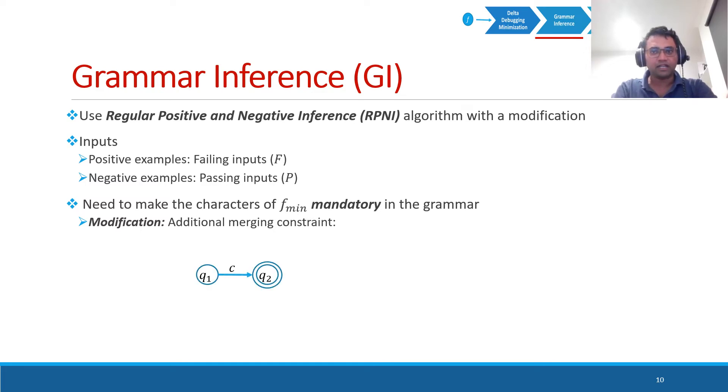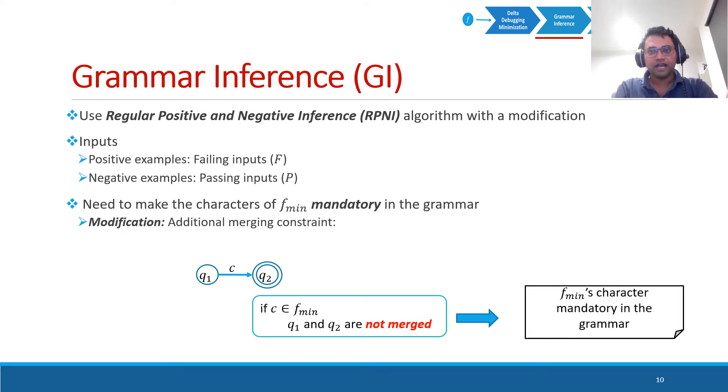Assume that between this Q1 and Q2, there is an interstate transition taking the character C. If this character C is a character of the minimal failing input, these two states are not merged. Therefore, we can have a grammar where the characters of the minimal failing inputs are mandatory.